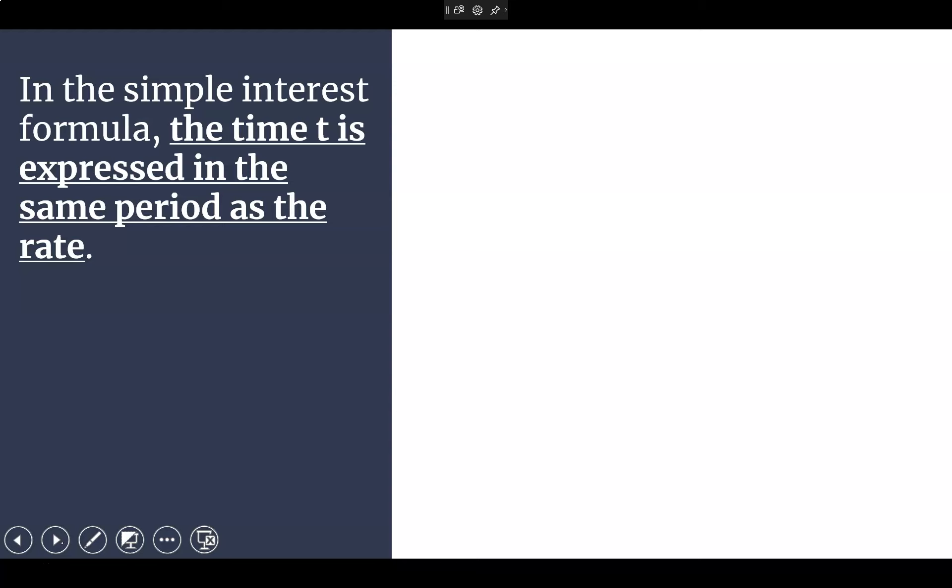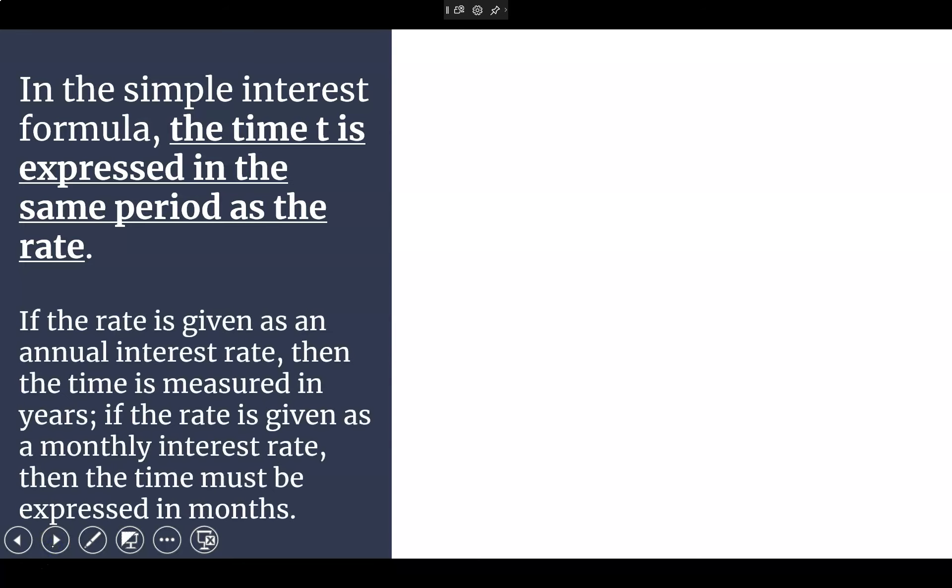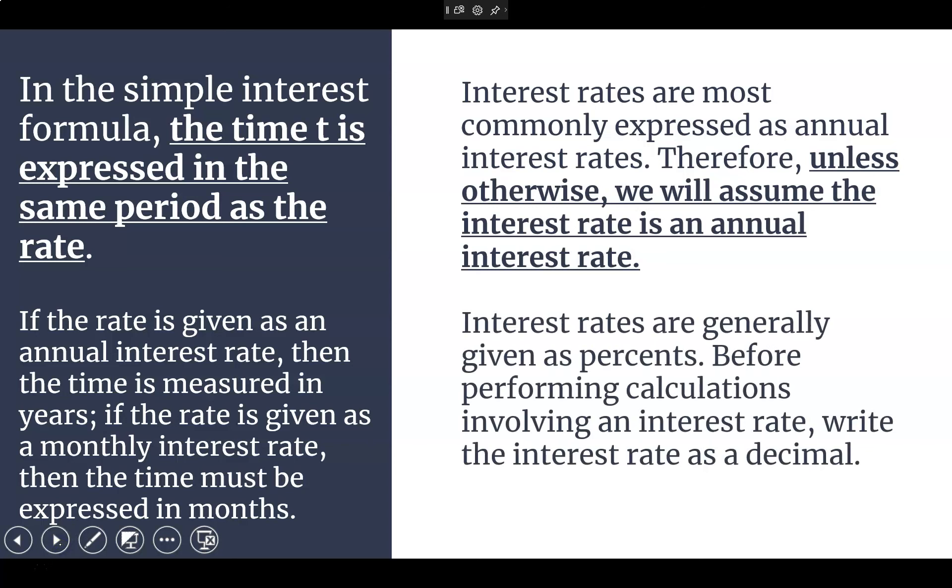In simple interest formula, the T, which is time, is expressed in the same period as the rate. So if the rate is given as an annual interest, that's going to be a time that's going to be measured in years. If the rate is given a monthly interest, then we're going to have to alter our rates to be expressed in months. Interest rates, though, are most commonly expressed as the annual interest rates. So we will always assume that unless we're told otherwise.